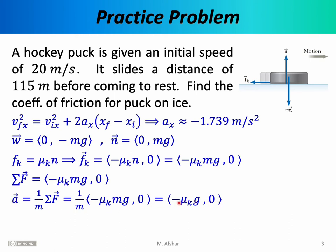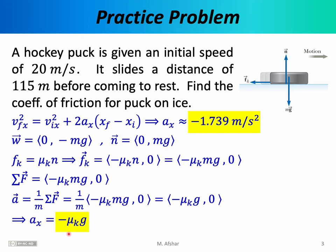Focusing on the x direction: from Newton's second law the acceleration is −μg, and from kinematics it is −1.739 m/s². Setting these equal and solving, with g = 9.8, we find that the coefficient of kinetic friction for puck on ice is approximately 0.177.